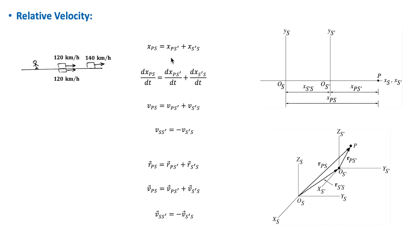Differentiating that position equation gives us: the velocity of particle P relative to frame S equals the velocity of P relative to S' plus the velocity of S' relative to S. These two equations are known as the Galilean transformation equations. For any two frames of reference S and S', the velocity of S with respect to S' equals minus the velocity of S' with respect to S.